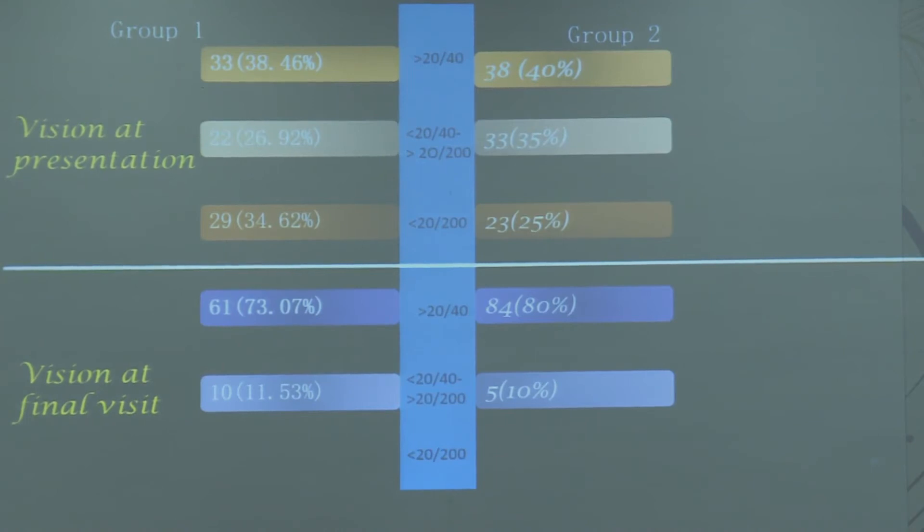The patients which did not improve or had poor visual prognosis were 15% in Group 1, whereas it was only 10% in Group 2.